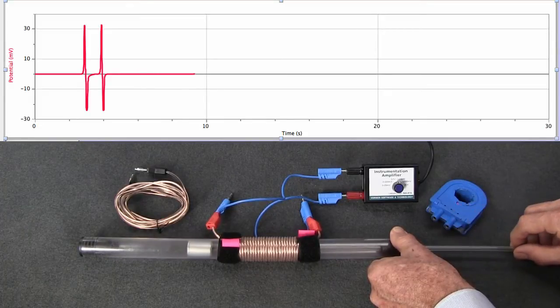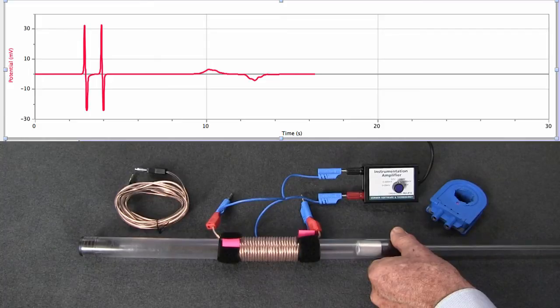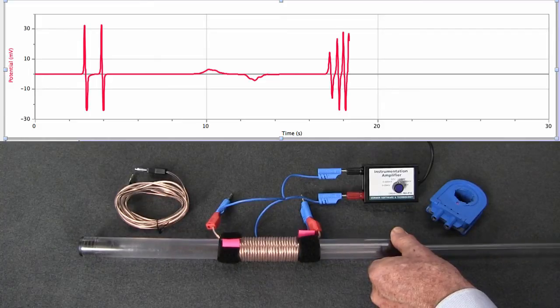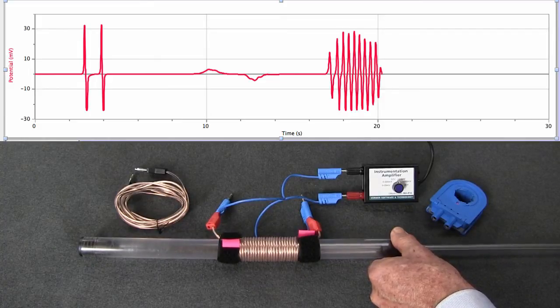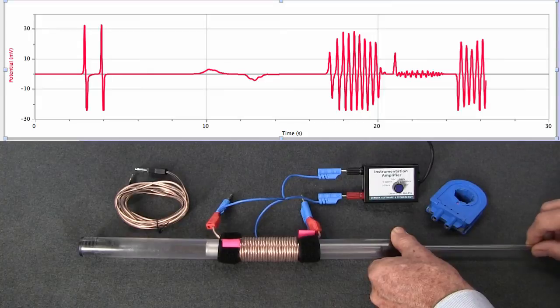When I move the magnet through the coil very slowly, it produced a pulse which was very flat in the middle. When I move the magnet very quickly at one end, it produced a lot of change. When I moved it quickly in the middle, not very much change at all. At the other end, a lot of change again.